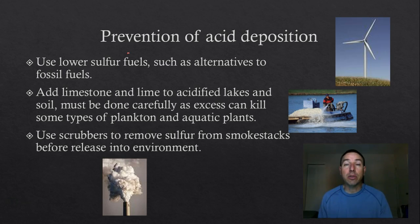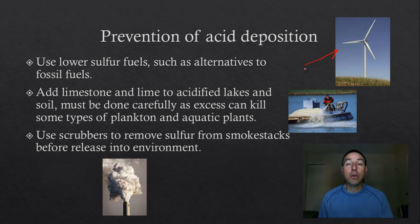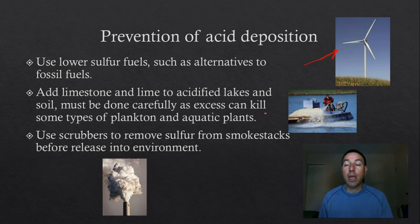How can we prevent acid deposition? One way is to use low-sulfur fuels — for example, low-sulfur diesel is available now, and while it's more expensive because the sulfur has been removed, it's the best option. We can also shift electrical generation away from coal plants toward wind, solar, and hydroelectric power, none of which contribute to acid deposition. If our lakes are already having problems, we can buffer them with limestone — this picture shows a company washing lime into a pond affected by acid deposition to help stabilize the pH.